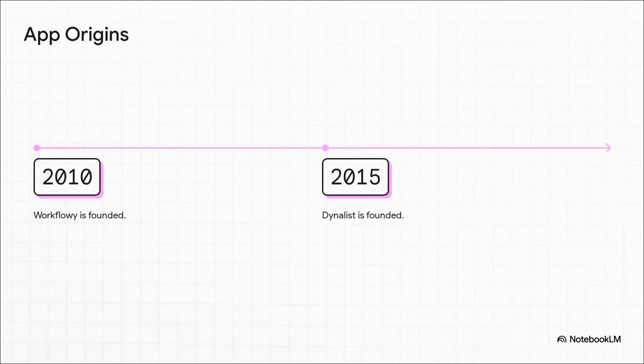A quick look at their history tells you everything. Workflowy was the pioneer — it showed up back in 2010, really setting the stage for that minimalist vibe. Then, five years later, Dynalist came along, having had the chance to see what worked and deciding to build something way more feature-rich right from the get-go. And you can still feel those origins in how they're designed today.